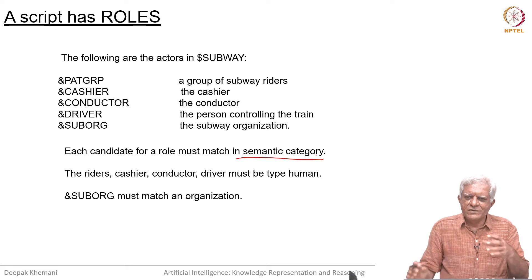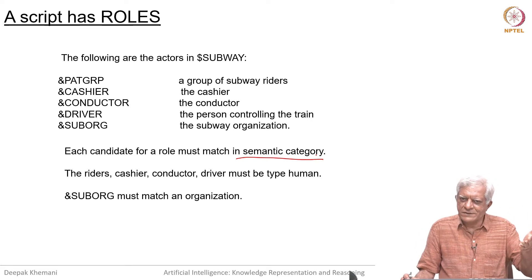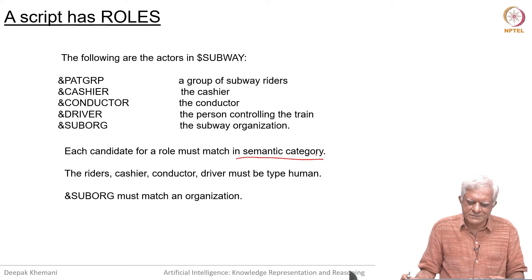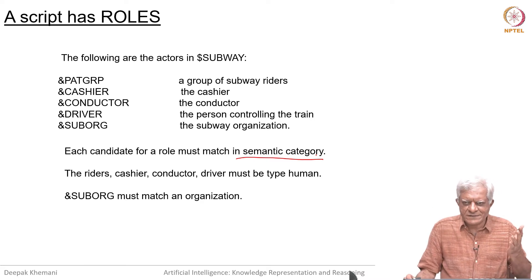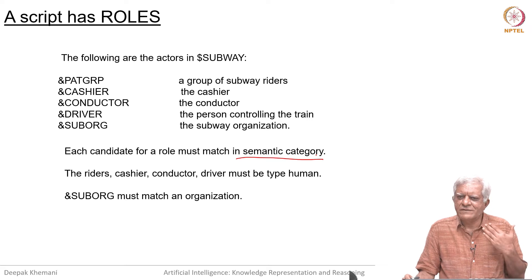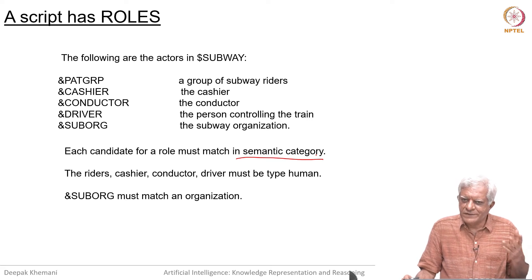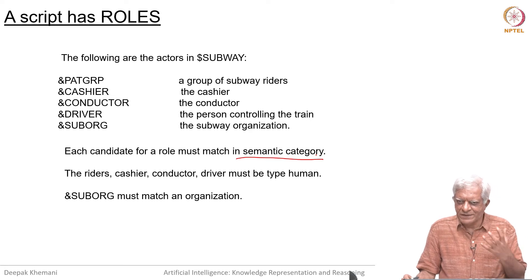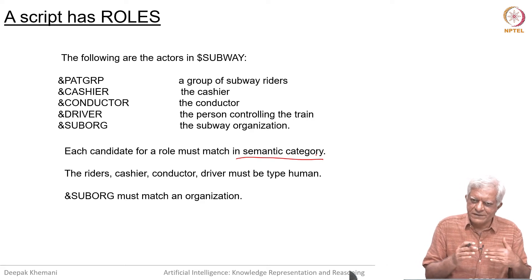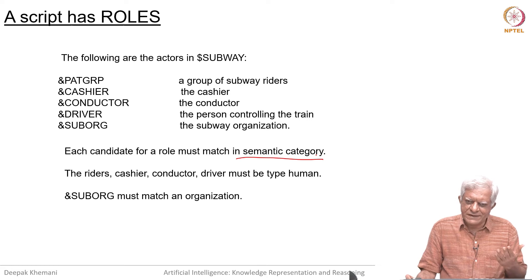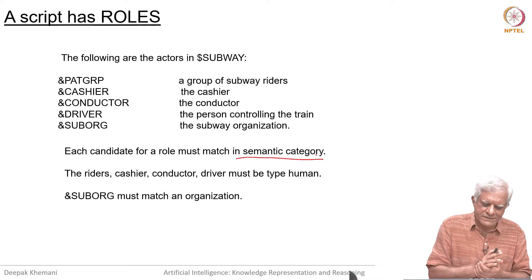That makes the task of searching through possible interpretations much simpler. If you know you are talking about a restaurant script, you know what it means that 'he ordered a burger.' Semantic category is one thing, situational knowledge is still a larger thing, and sentence structure is also important - as we saw with the example 'I saw the Grand Canyon flying to New York.' It is the English language that tells us the relation between the two sub-parts of the sentence, while semantics tells us that grand canyons do not fly to New York.